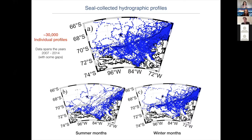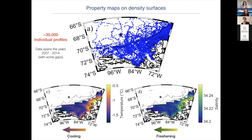This current has been fairly well studied in the region of the West Antarctic Peninsula, and one of the things we were curious about is what happens when it gets into the Bellinghausen Sea. The Bellinghausen Sea has a lot less traditional observations, but we've been able to use instrumented elephant seal data to start looking at the distribution of this boundary current. The data spans 2007 to 2014, with some 30,000 profiles.